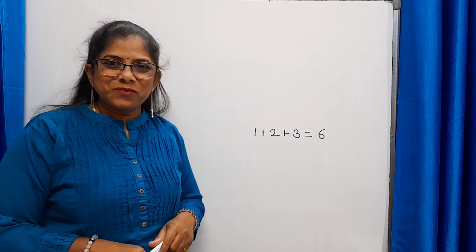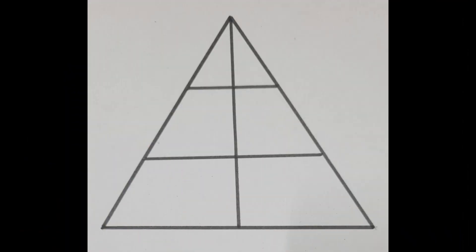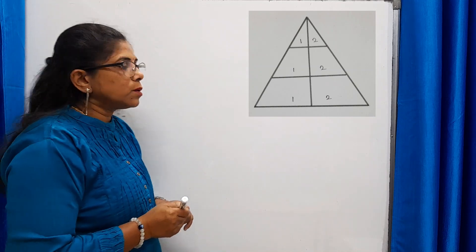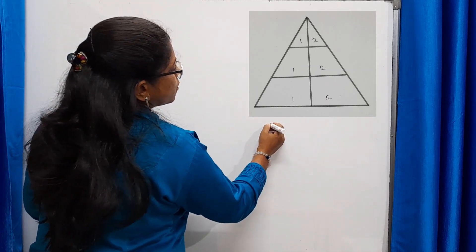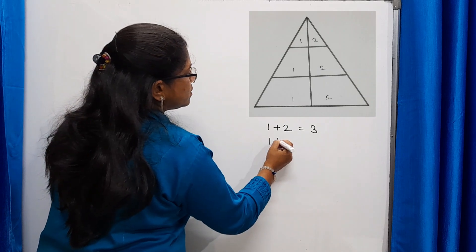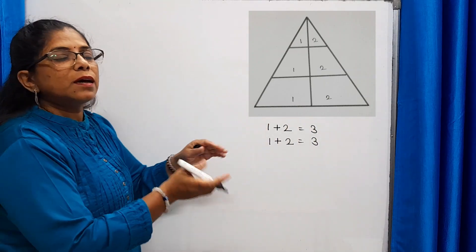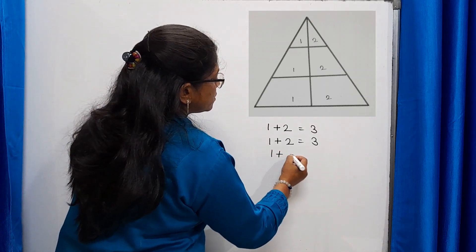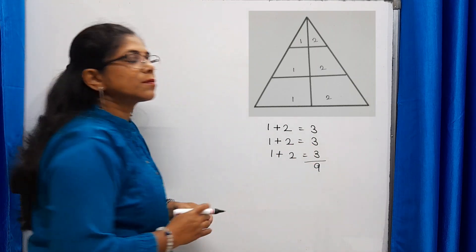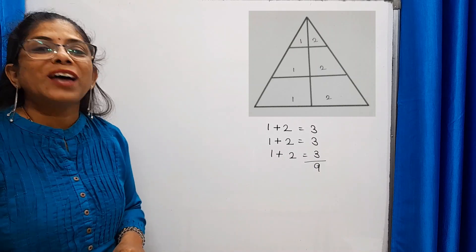Let's check one more example. Here is one more interesting figure — count the total number of triangles. We have three bases and one vertical line from the upper vertex. On the first base, one plus two gives three triangles. On the second base, again one plus two gives three triangles. So here, the total number of triangles is nine — altogether we have nine triangles.